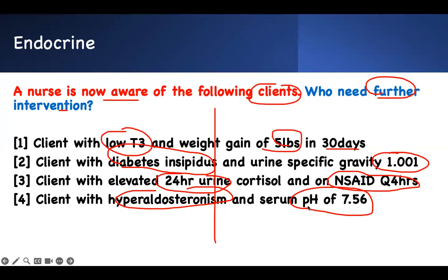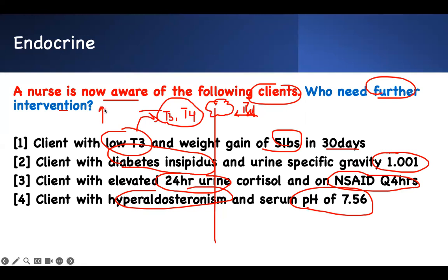This question is designed to test your knowledge about endocrine — specifically the signs and symptoms for each diagnosis. Going back to T3: this is thyroid hormone. You have T3 and T4, both made by the thyroid gland in response to TSH stimulation. What do T3 and T4 do? They increase your metabolic activity.